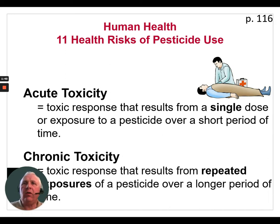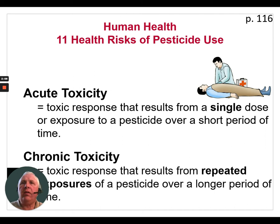There are two types of toxicity to think about. Acute toxicity is the toxic response that results from a single dose or exposure to a pesticide over a short period of time. An example is when filling a sprayer — working with concentrated pesticide straight out of the container — and you get a spill on yourself. That is acute toxicity. Chronic toxicity, on the other hand, is a toxic response that results from repeated exposure to a pesticide over a longer period of time. If over the years you're not always as careful as you should be and you're constantly getting a little bit of pesticide into your system, that's long-term chronic toxicity.